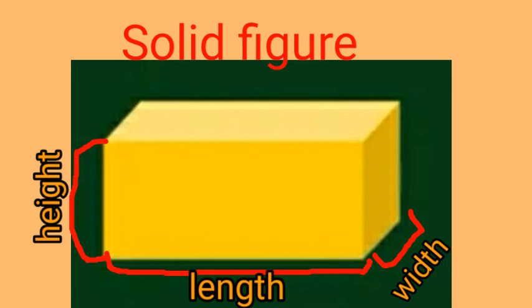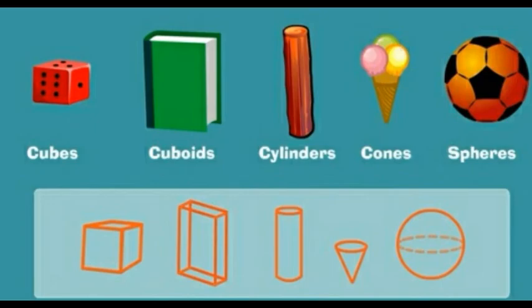Thus, we can say solid has definite shape and size, cannot be pressed easily. Here we learn about few solid shapes such as cube, cuboid, cylinder, cone, and sphere.